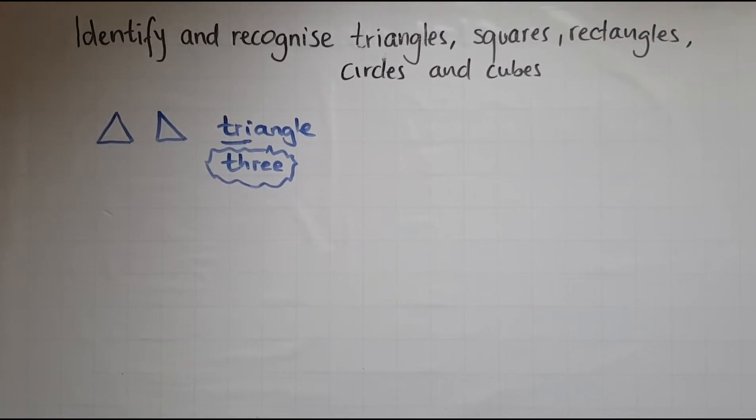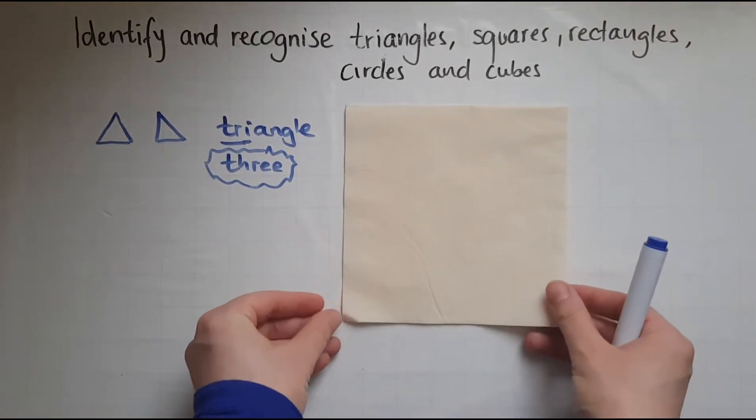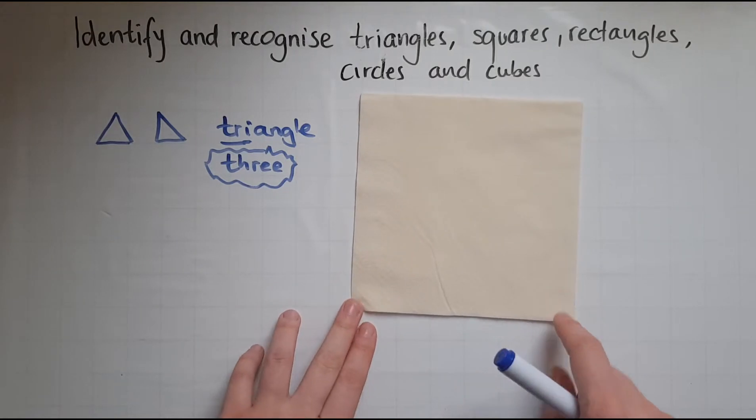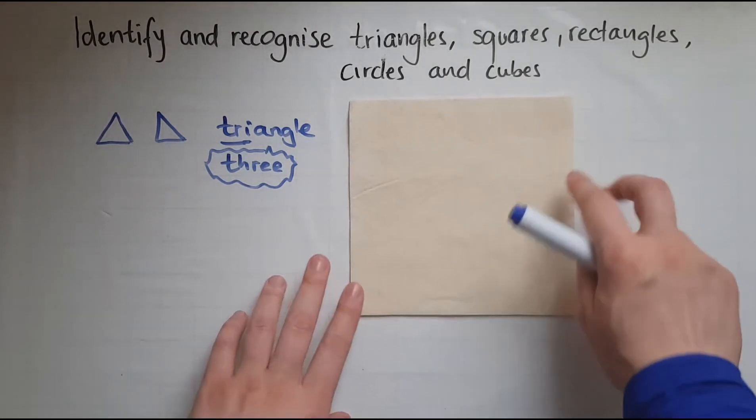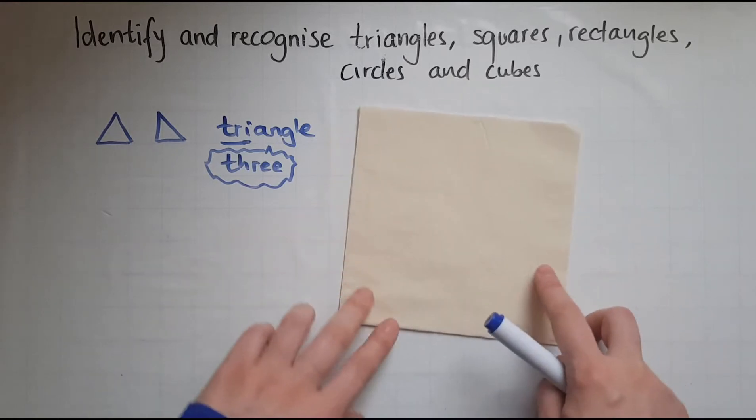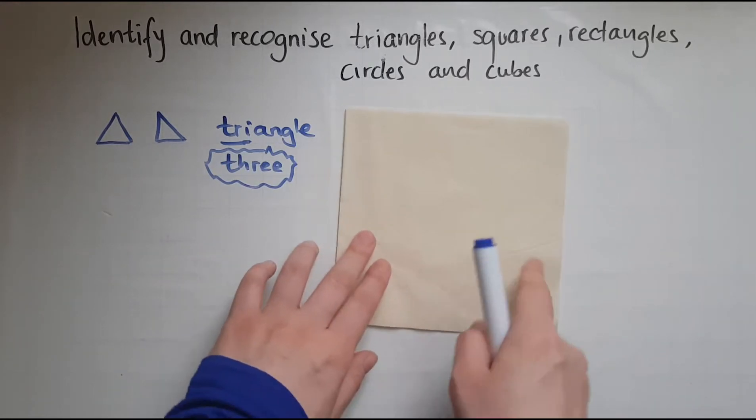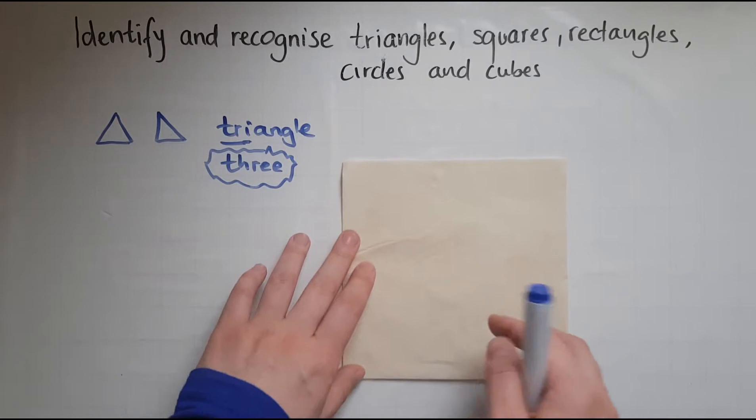The other shape we need to look at is a square. I've got a napkin square, a paper one. So a square has four different sides, which are all the same. So all these different lengths are the same, the four of them.